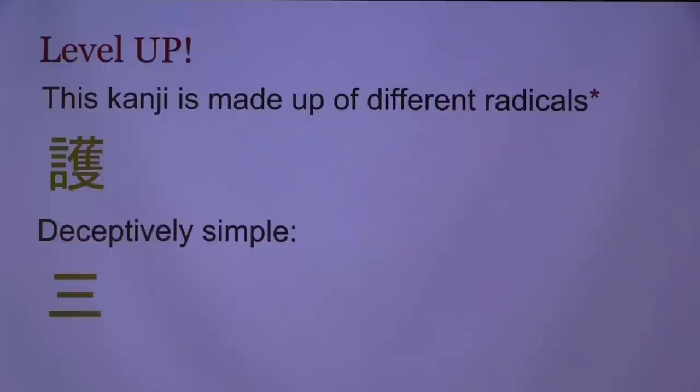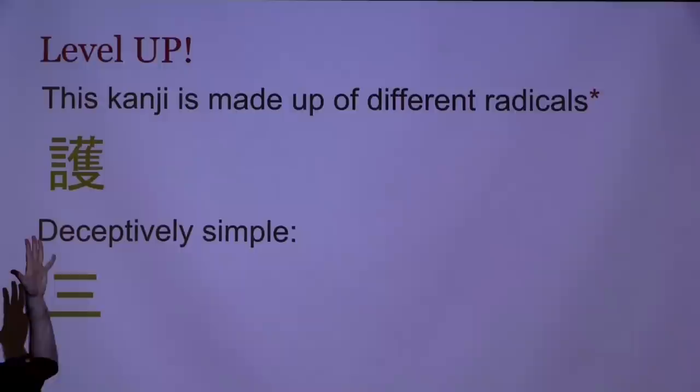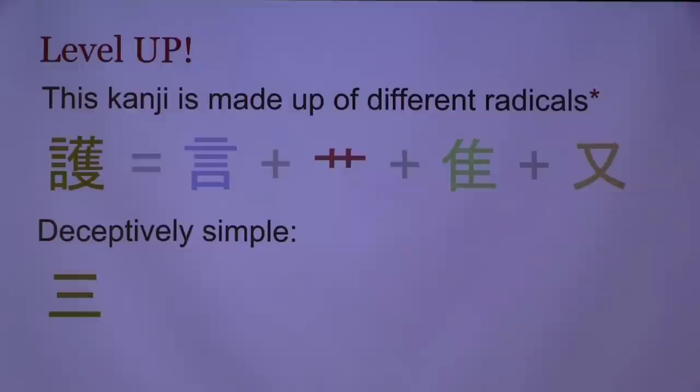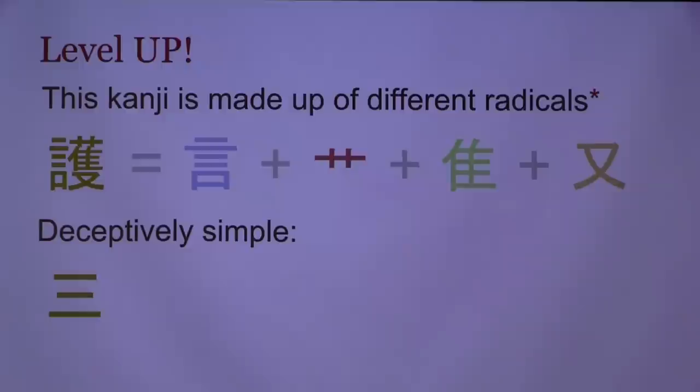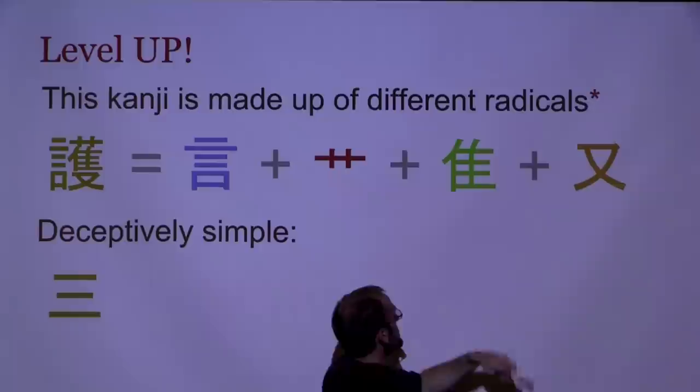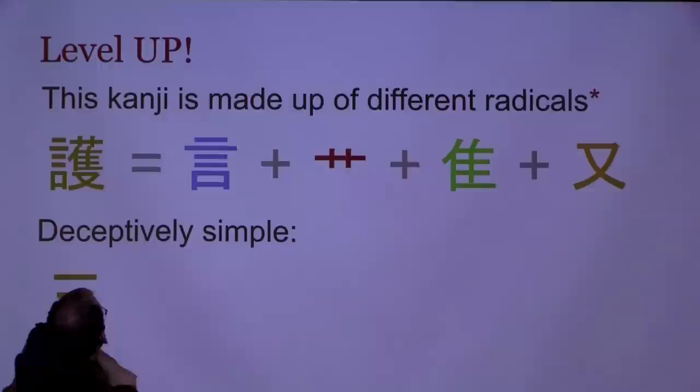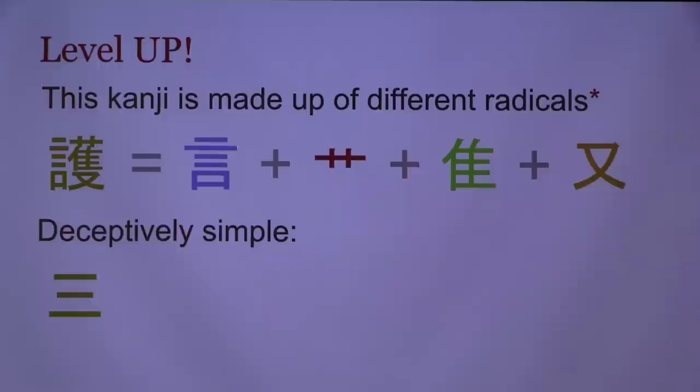Think about kanji as being made up of different radicals. For this character up here, how many radicals does it have? Four — word, grass or plant, old bird, and 'mata.' So that's 'mata,' 'furutori,' 'kusakanmuri,' and 'kotoba' or 'gen,' in this case 'gomben.' This kanji is made up of radicals.